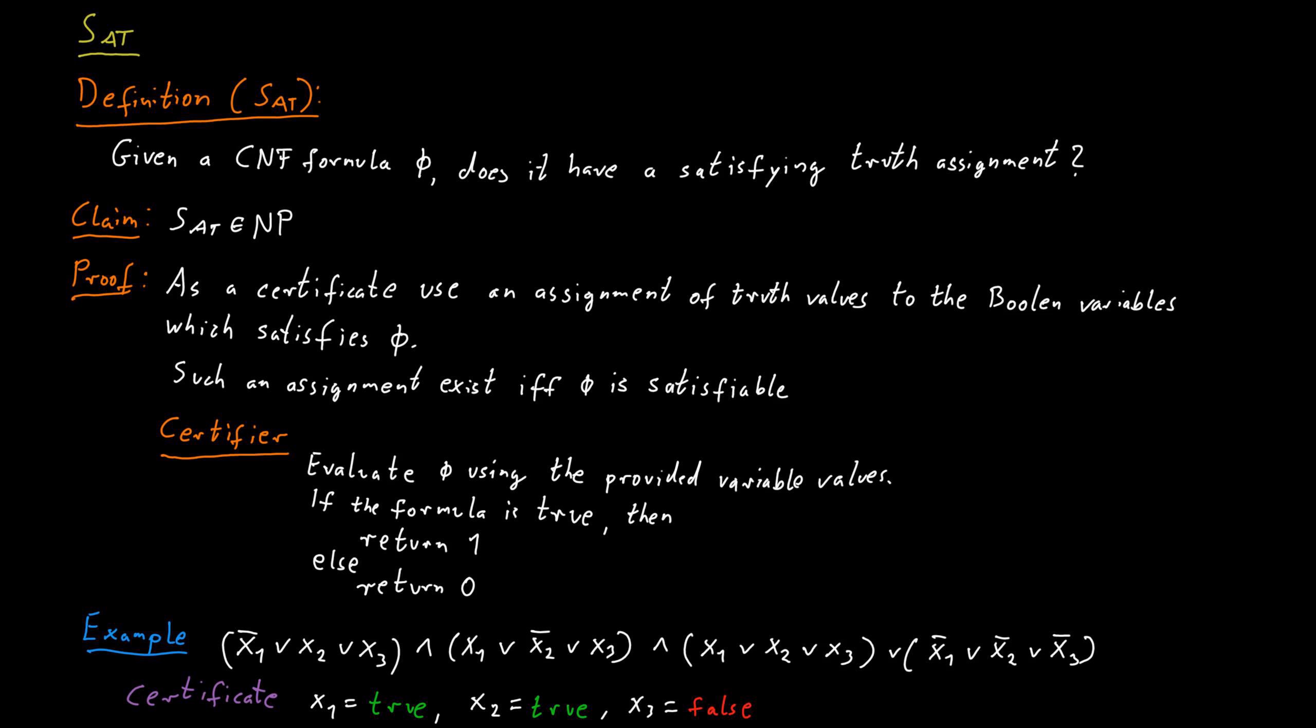The first clause contains the literal x2 which is true, the second clause contains the literal x1 that is true, the third clause contains a literal x1 that is true and also x2, and the last clause contains the literal not x3 which is true because x3 is false.